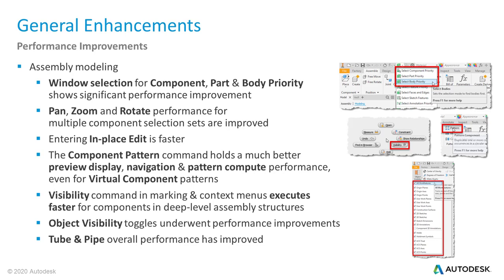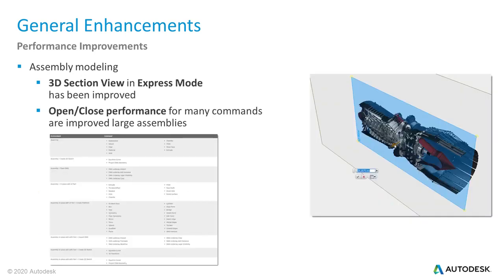The visibility command, found by right-clicking on a component, behaves considerably faster than in previous releases of Inventor. Another mentionable improvement is the improved object visibility behavior while toggling. Those using the 3D section view command on a regular basis will be glad to see smoother interaction during sectioning in express mode. Further, the Inventor team has improved the open and close performance for many commands used when working on large assemblies.